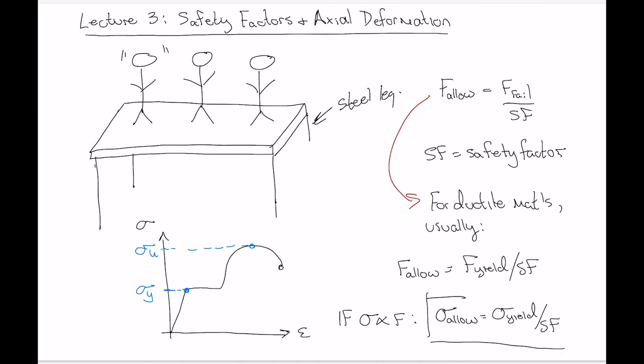That's the expression that will come in most handy in this course. For shear stress, the allowable shear stress equals the shear yield strength divided by the safety factor. For brittle materials with no yield stress, the allowable stress equals the ultimate stress divided by the safety factor. Let's do a numerical example to show how this is used.